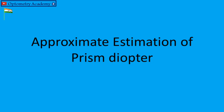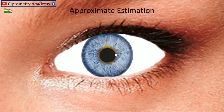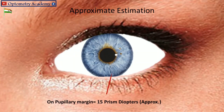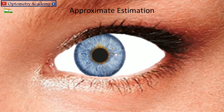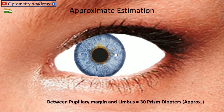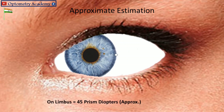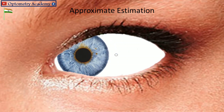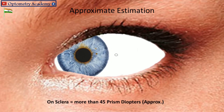Approximate estimation of prism diopters: On the pupillary margin — approximately 15 prism diopters. Between the pupillary margin and limbus — approximately 30 prism diopters. On the limbus — approximately 45 prism diopters. On the sclera — more than approximately 45 prism diopters.